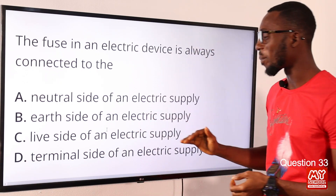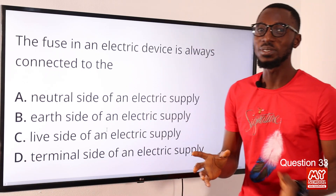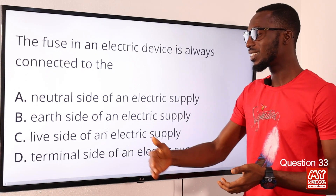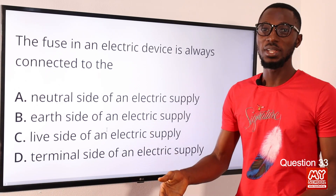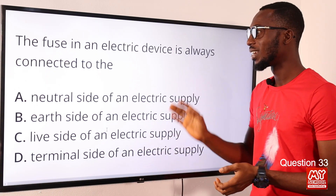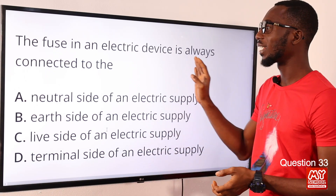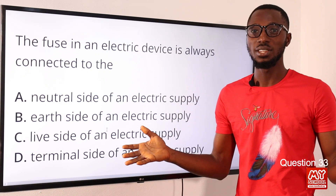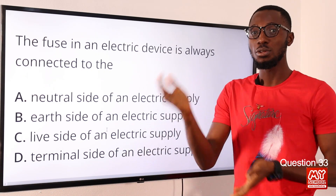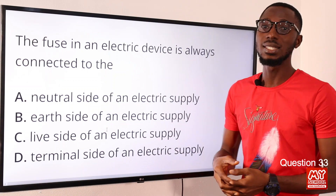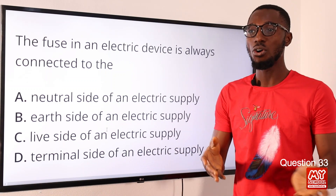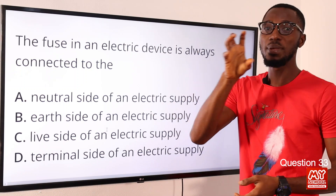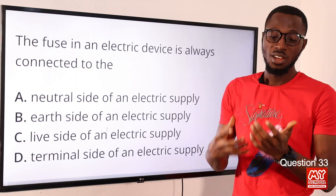Question 33: The fuse in an electric device is always connected to the live side of the electric supply. This is so that when a current exceeding the rated value flows in, the fuse acts as a safety device — it opens up the circuit, cutting off current flow so that the wiring or appliance is not damaged.